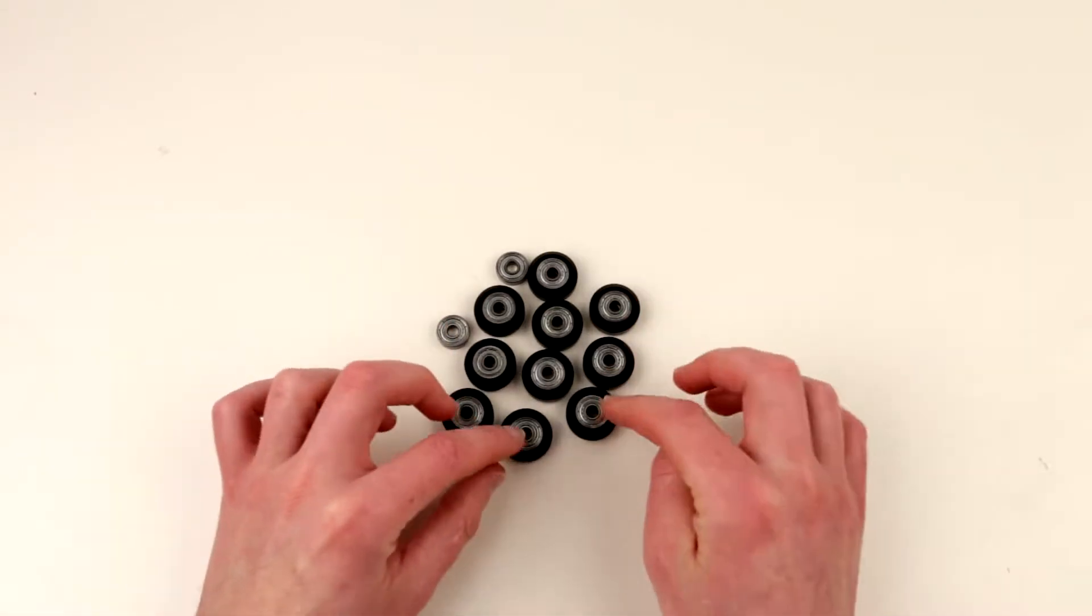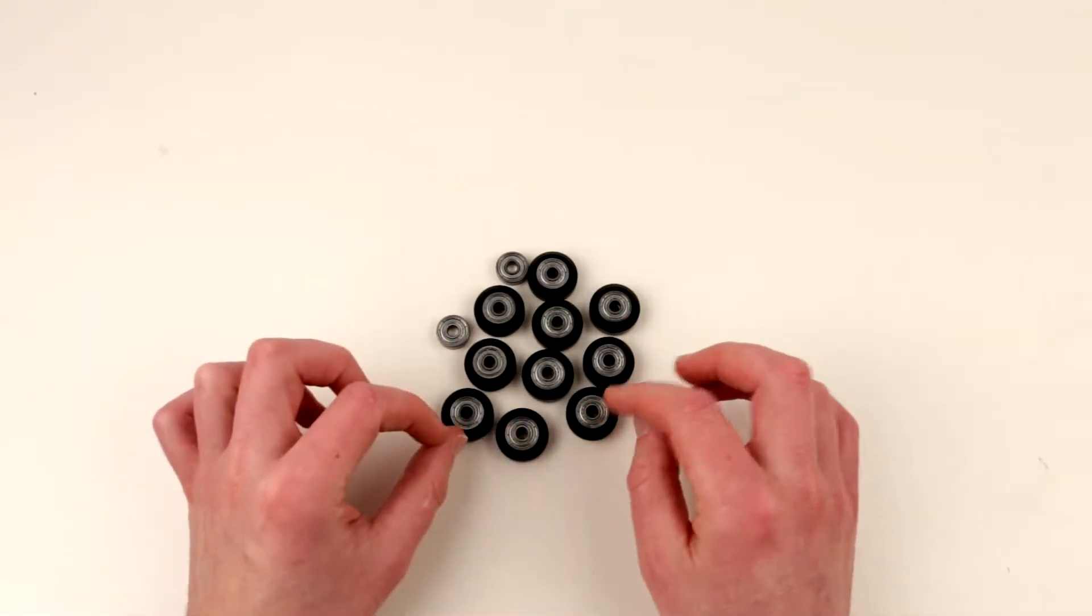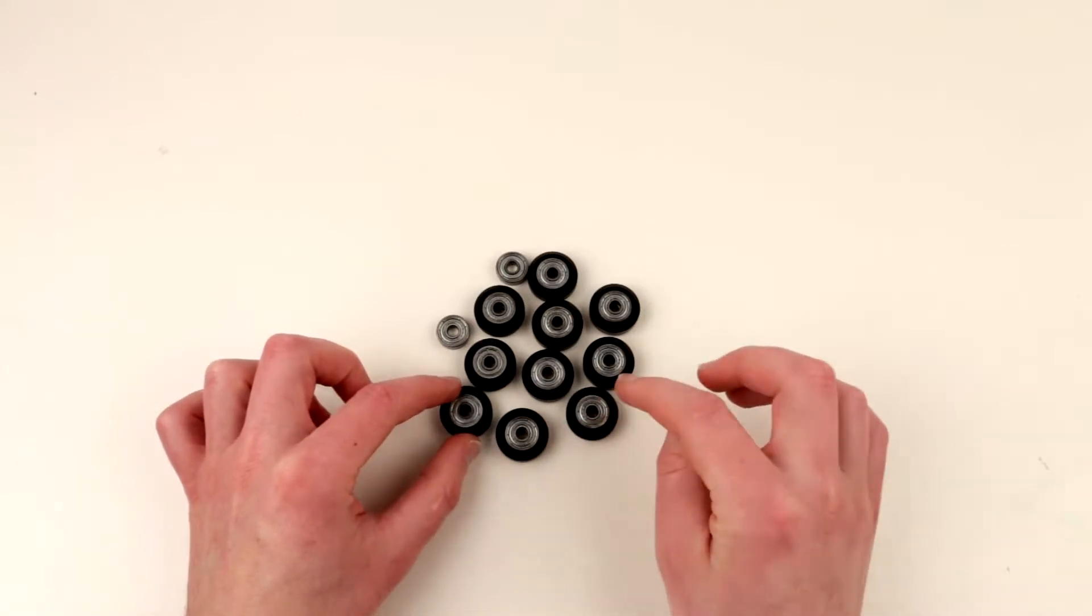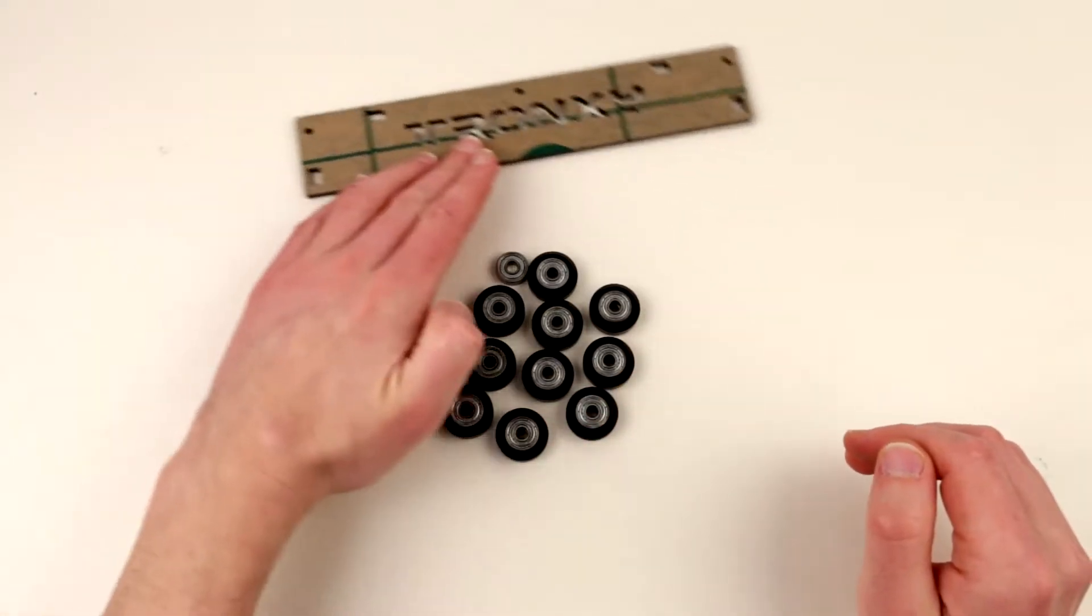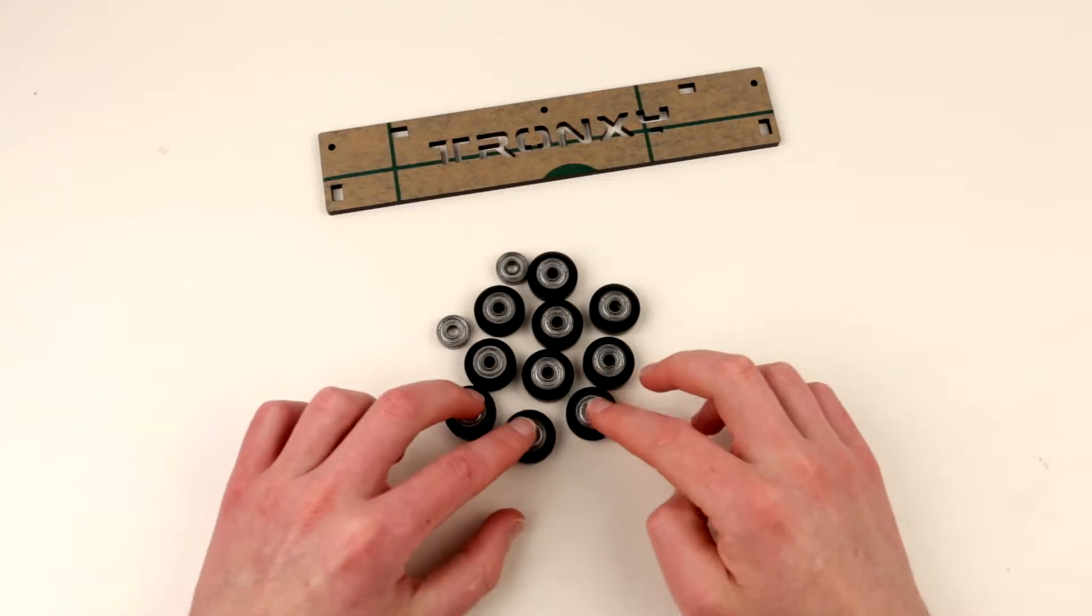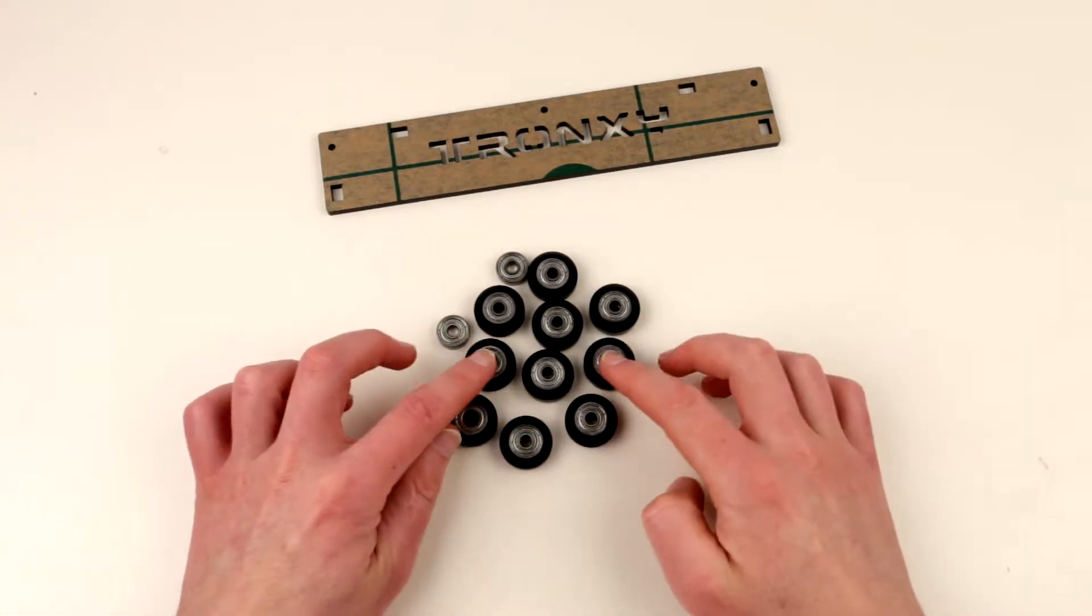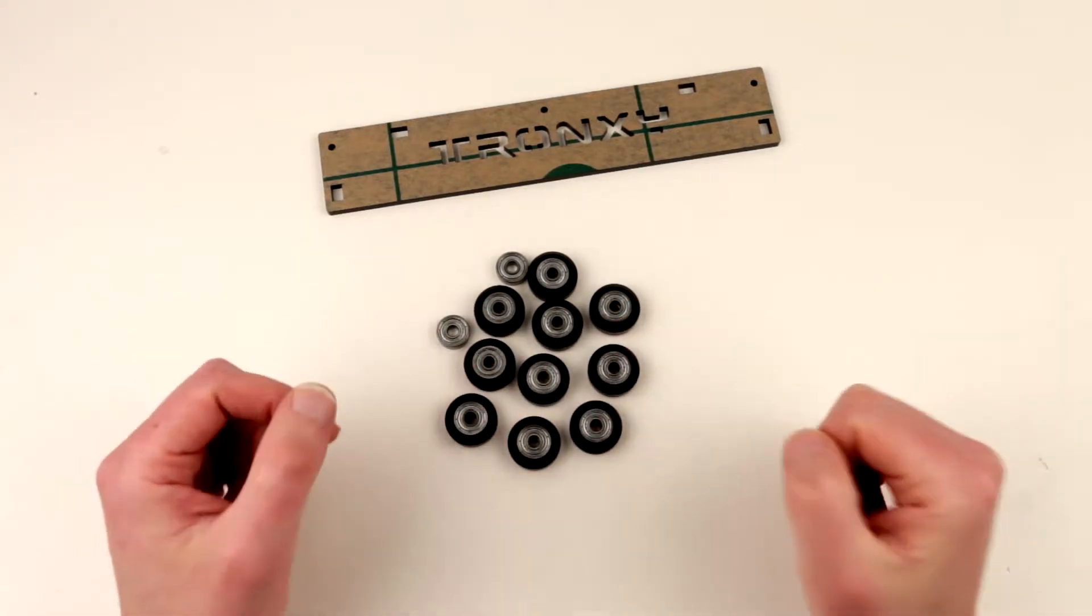First of all, bearings should be nice, smooth, and very well lubricated. To bring a little bit of context, I put this in over here and everyone understands that we are talking about Tronxy 3D printer and that we are fixing their gunked up bearings.